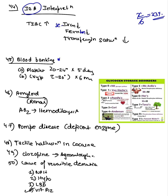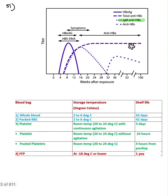Blood banking questions: RBCs are stored at 2–6°C; platelets at 20–24°C (room temperature) with continuous agitation — without agitation, only one day. Cryoprecipitate and FFP are stored around minus 18°C. Shelf life depends on the anticoagulant used, such as CPD acid. Fresh frozen plasma can be stored for one year.